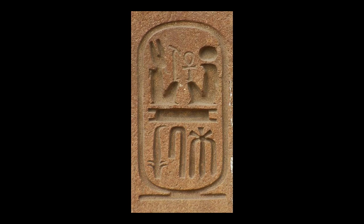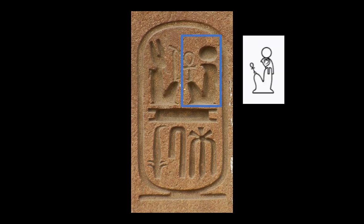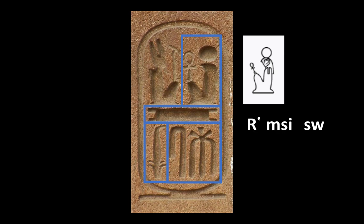The first hieroglyph we identify on the top right corner is the symbol of the god Ra. We transliterate it as the letter R. The next symbol is a composite hieroglyph, which is transliterated as MC, and it is translated as 'Begot.' So 'Ra Begot,' and the third symbol, which is the stem of a plant, is transliterated as SW. The whole group translates as 'Ra Begot him.'